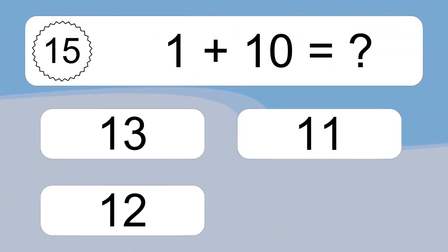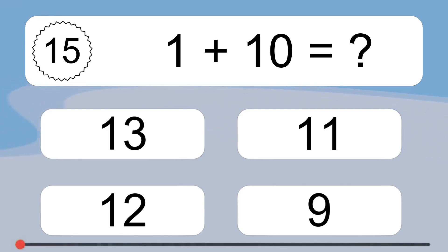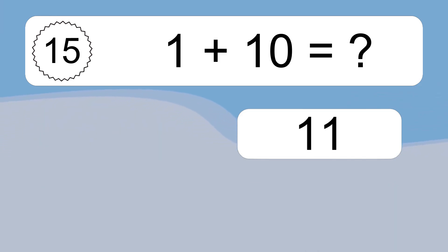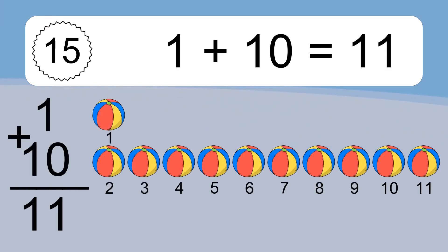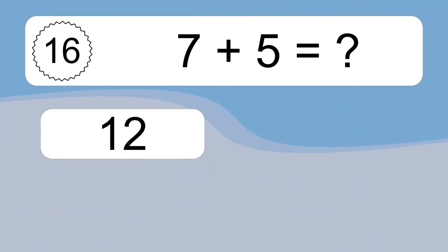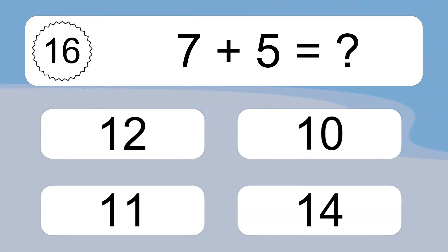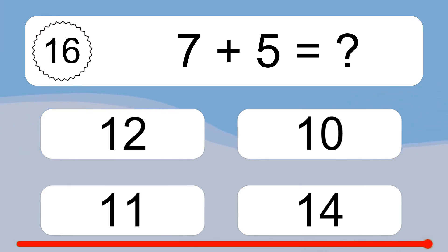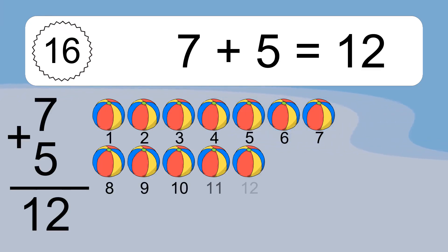1 plus 10 equals what? 1 plus 10 equals 11. Let's count it. 1, 2, 3, 4, 5, 6, 7, 8, 9, 10, 11.